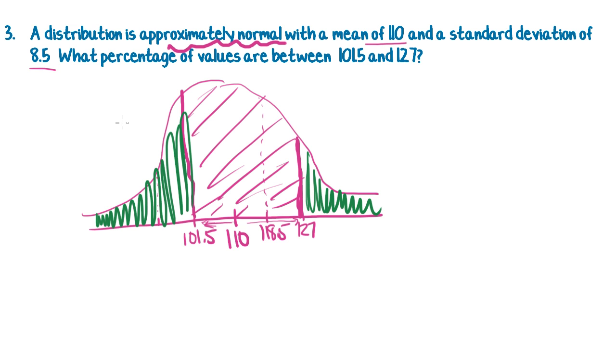So this 127 line corresponds to two standard deviations up. So that's the 95 rule. So what's in that tail? If you've got 95 in the middle section, you've got 5% remaining, which is split between two tails. So there's 2.5% in that tail.